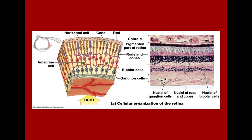Looking at this diagram, on the outer part of the eye is the pigmented part of the retina. Here you can see the rods with their blunt ends versus the cones with tapered ends. They synapse with bipolar neurons, which then synapse with ganglion cells. The axons of the ganglion cells then bundle as they move along the inner surface of the retina back toward the optic disc.